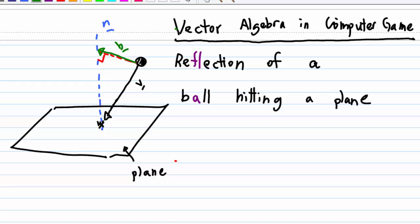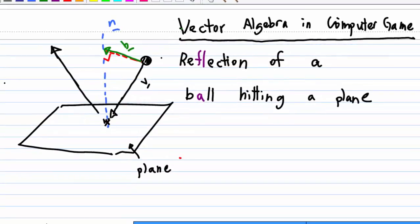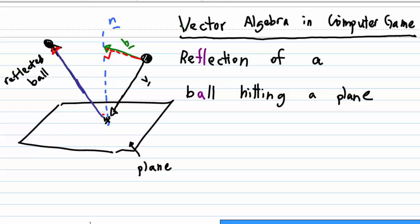As the ball is reflected, it reflects in this direction. The direction of the reflected ball is equal to negative v plus 2 times b.